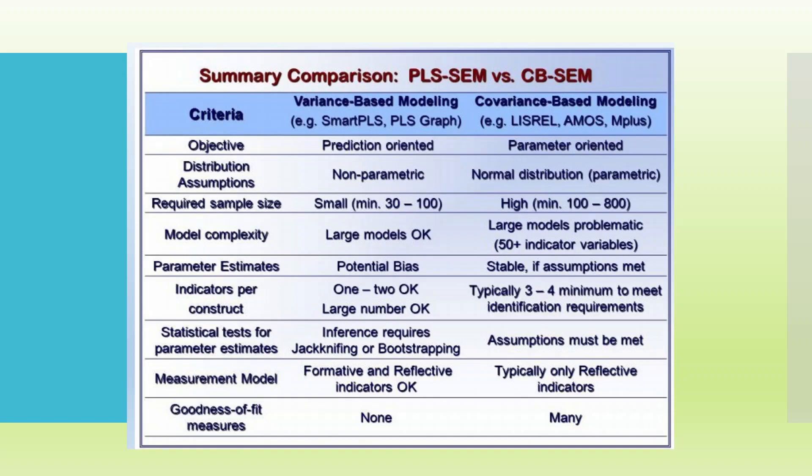Model complexity: large models, Smart PLS can handle very easily. If there are 50 plus indicator variables, AMOS or Lisrel can create a problem. Parameter estimates in case of Smart PLS are potentially biased. Here, they are more stable because we have the assumption of normality. Indicators per construct: in case of AMOS, 3 or 4 are minimum required. In case of Smart PLS, we can work with one or two indicators also.